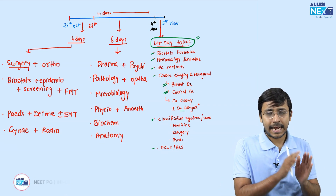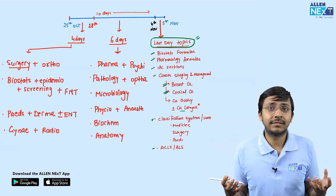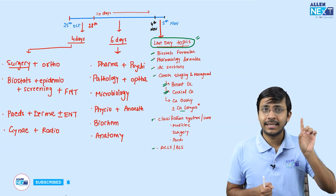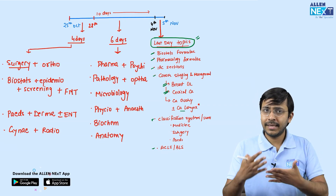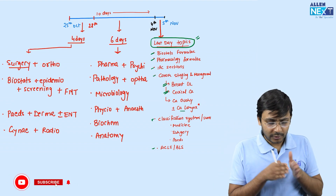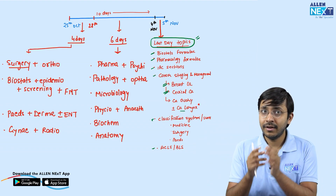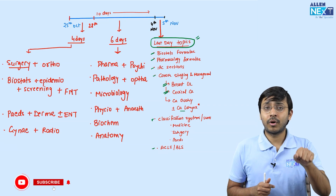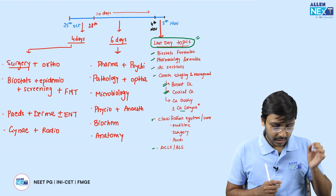For PSM, don't try to do everything in these last 10 days. Only cover super important topics like Biostats, Epidemiology, and Screening — sensitivity and specificity tests — because questions in PSM come from these only. Integrate PSM with Forensic Medicine, which is very very important for INICET — around eight to nine questions will come from Forensic Medicine. One day of effort for eight or nine questions is absolutely worth it.